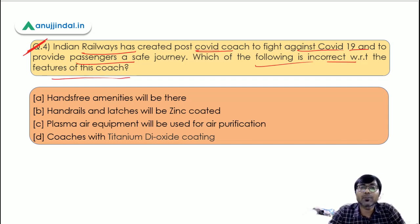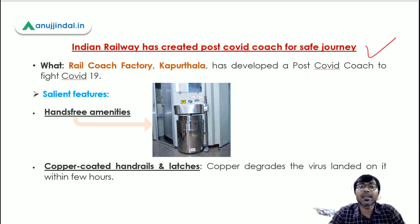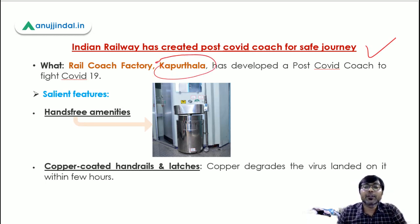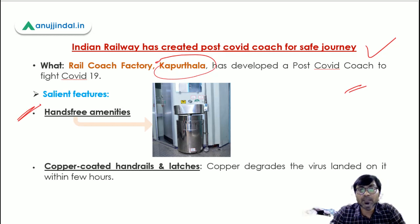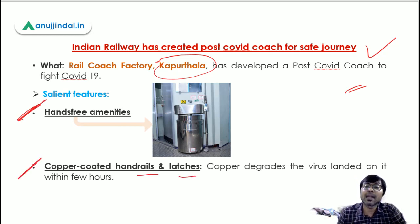Indian Railway has created a post-COVID coach, and this coach has been developed by Rail Coach Factory Kapurthala. In these coaches, there will be hands-free amenities - dustbins will be foot-operated, soap dispensers will also be foot-operated, toilet doors will be foot-operated, and the flush will also be foot-operated. So hands-free amenities will be provided in these coaches. Other than this, there will be copper-coated handrails and latches.